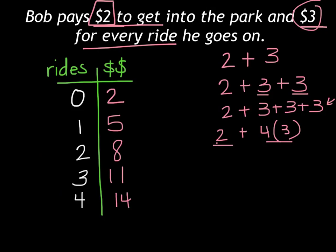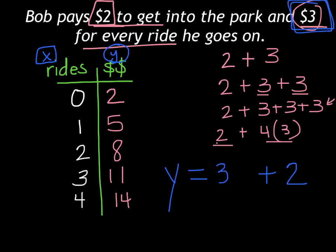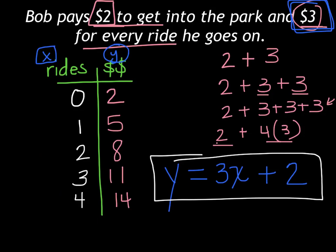Now I'll write an equation for how much it costs. Bob's bill is Y, and we don't know how many rides he goes on so let's call that X. The equation is y = 3x + 2, because it costs him $3 for every ride times however many rides, plus that $2 entry fee no matter what. For example, if he went on 10 rides: 3 times 10 is 30, plus $2, and I can figure out the cost for any number of rides.